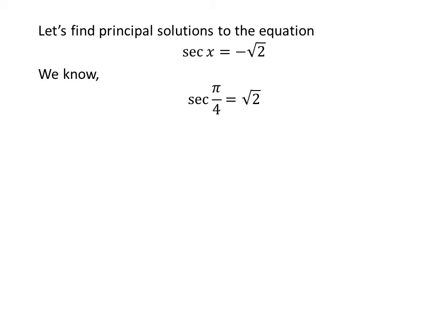We know the value of secant of pi upon 4 is square root of 2. We also know the trigonometric identity: secant of pi minus a is equal to minus secant of a. The proof of this identity is given in the video appearing in the upper right corner, and the link is also given in the description section.